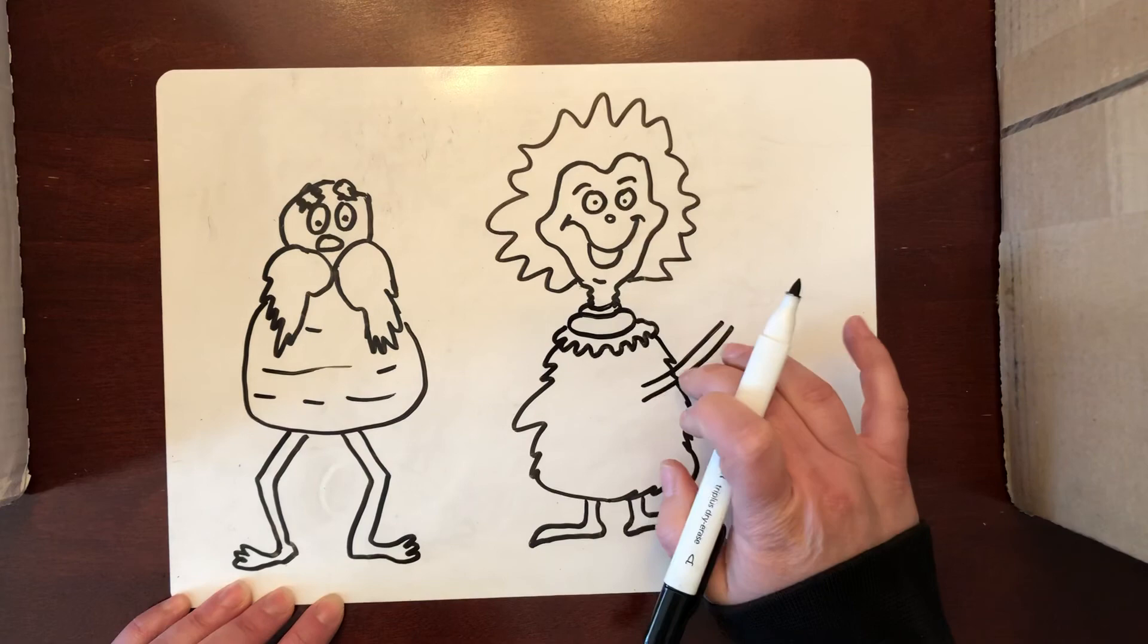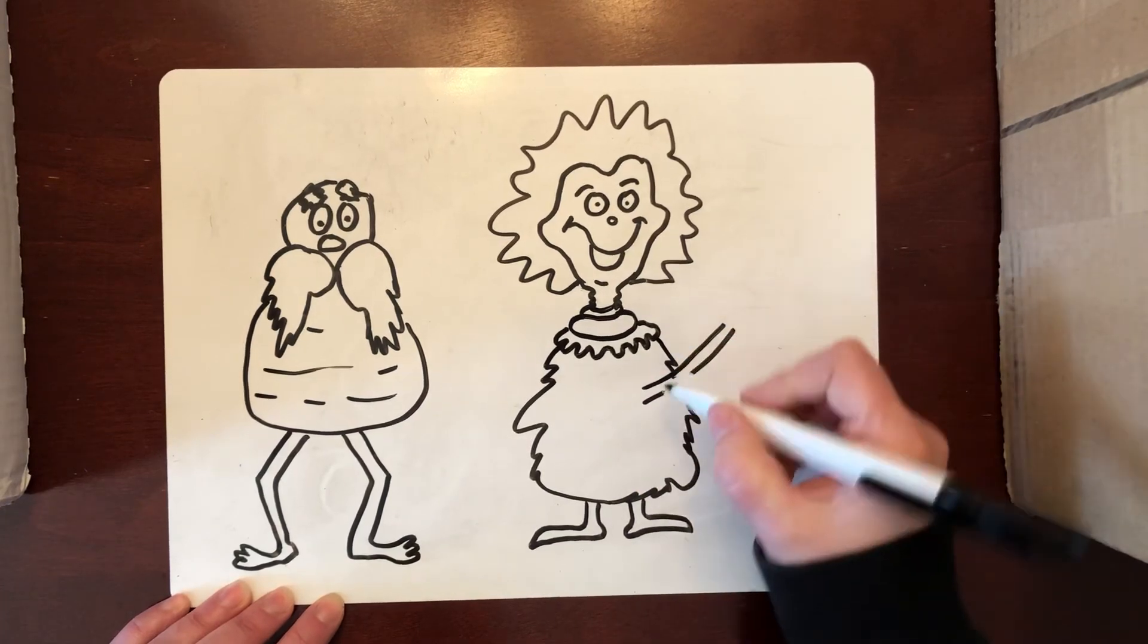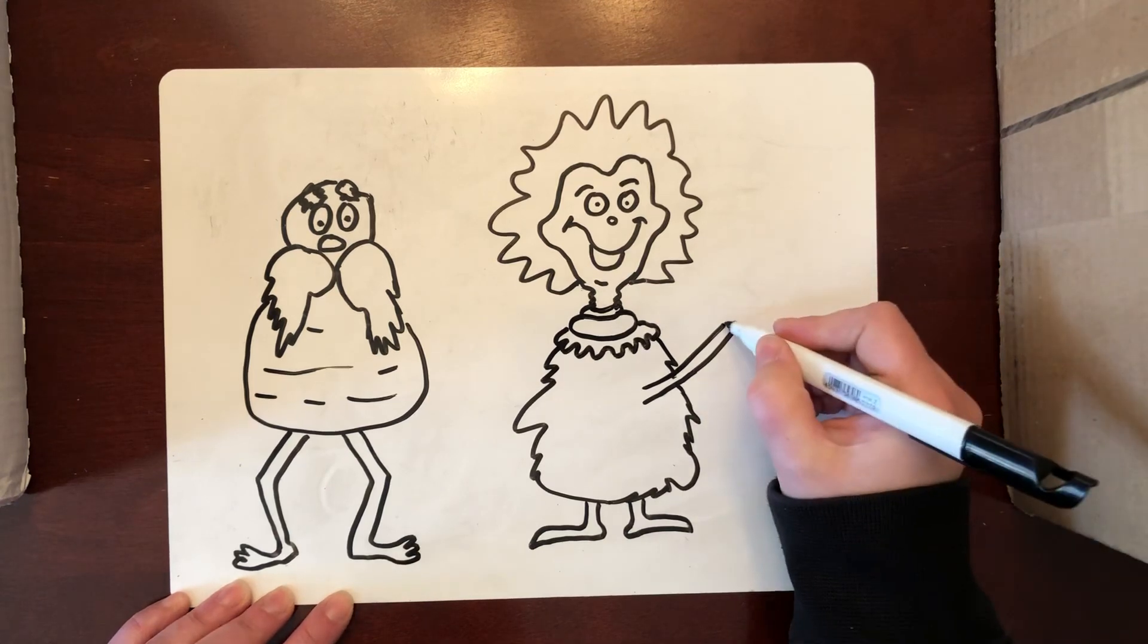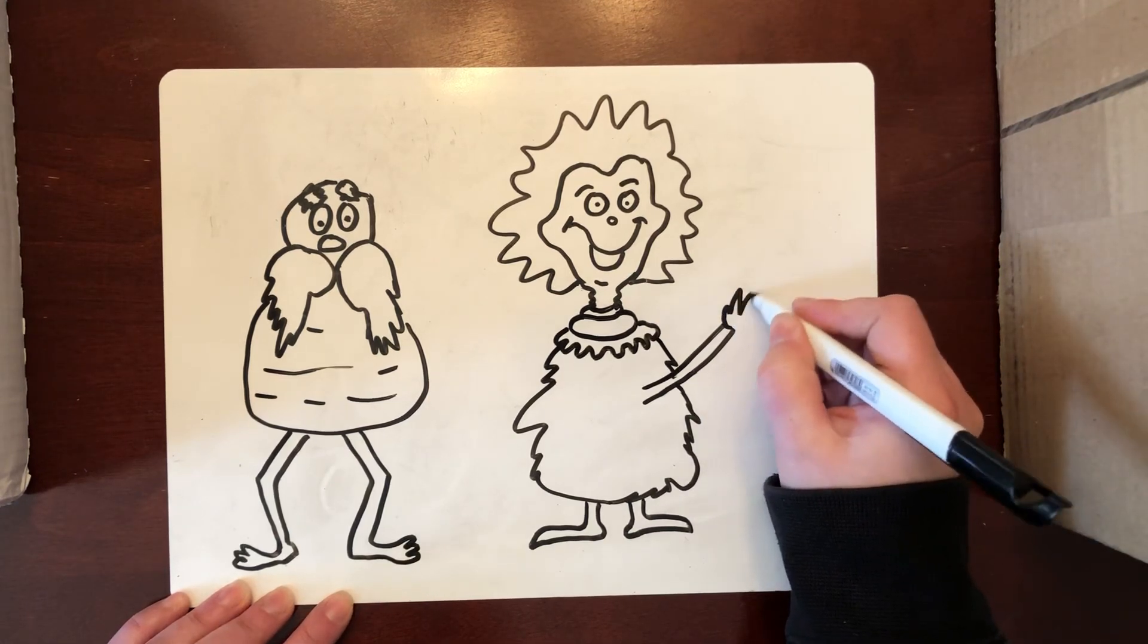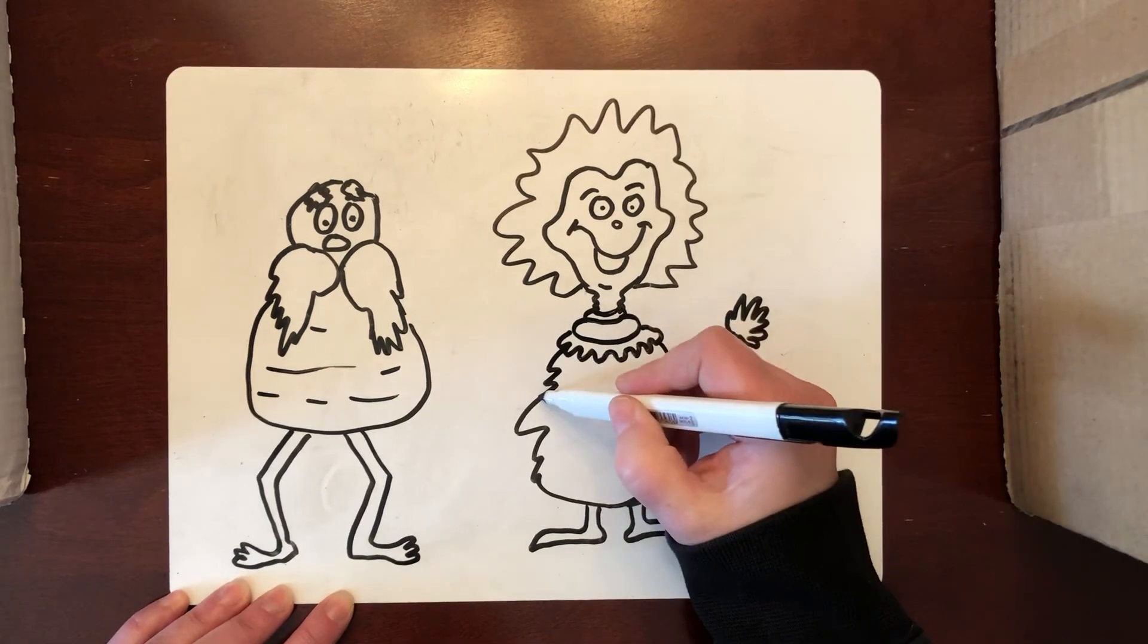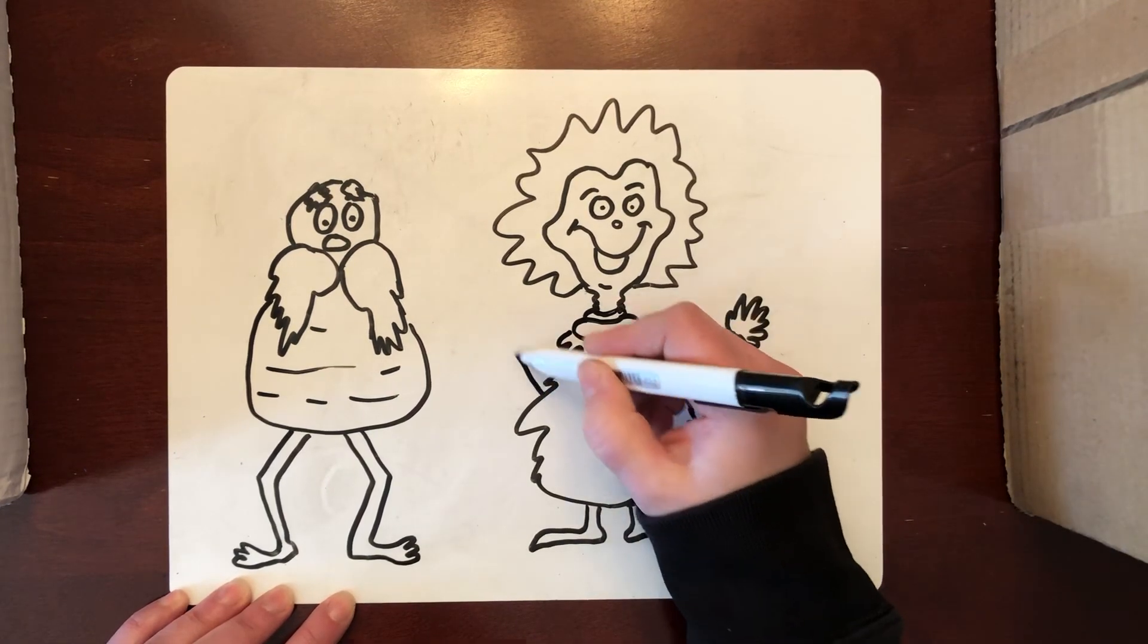I'm going to put the arm coming out of his body and if I do that I'm going to erase that body line so it doesn't look funny. And I'm going to give him a glove. And this arm's going to be back behind the body.